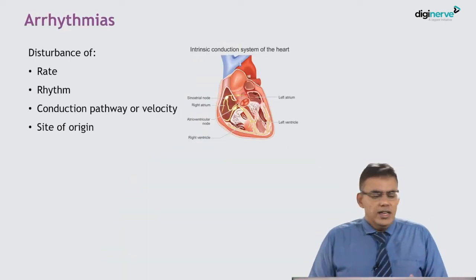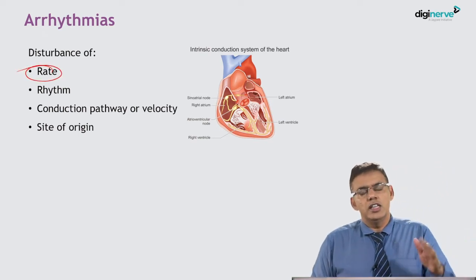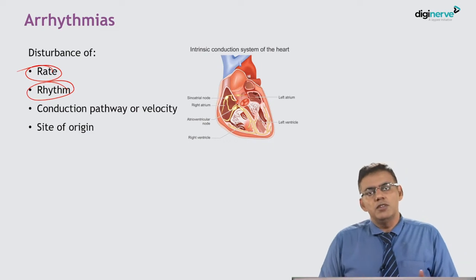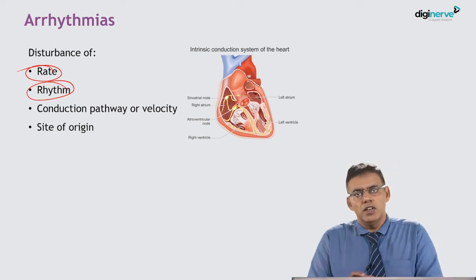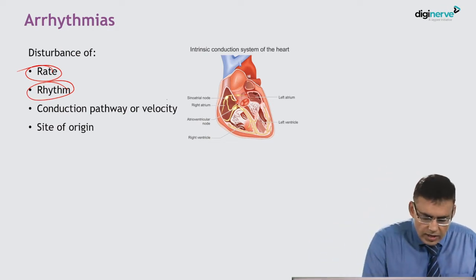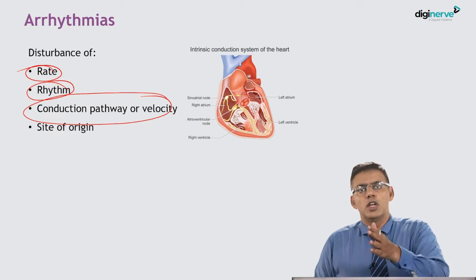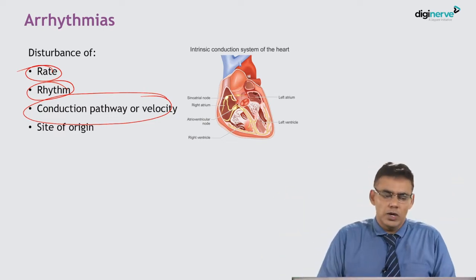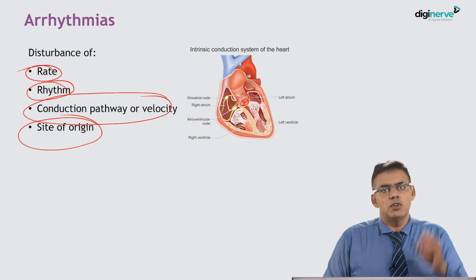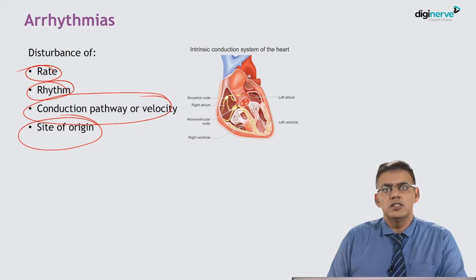What is a dysarrhythmia or arrhythmia? It is a disturbance of rate — anything more than 100 or less than 60 would be classified as a dysarrhythmia. It is also a disturbance of rhythm: the normal rhythm has a P wave, QRS complex, and T wave, and any disruption constitutes an arrhythmia. There can also be disturbance in the conduction pathway or velocity — impulses normally start from the SA node, go to the AV node, then to the bundle of His, and are distributed to the ventricles. Or there may be a disturbance in the site of origin, where the impulse arises from somewhere other than the SA node. All of this can lead to various types of arrhythmias.